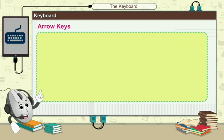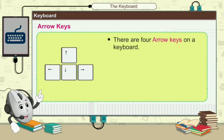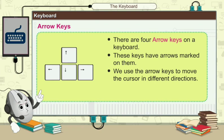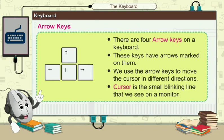Then we have arrow keys. There are four arrow keys on the keyboard — ये keys पे arrow draw किये हुए होते हैं. We use the arrow keys to move the cursor in different directions. अगर आपने पाँच या सात lines लिखी हैं तो cursor last line पे होगी, तो उसे move करवाने के लिए arrow keys use होती हैं. Cursor is a small blinking line that we see on the monitor — एक छोटी सी line होती है जो blink होती है.